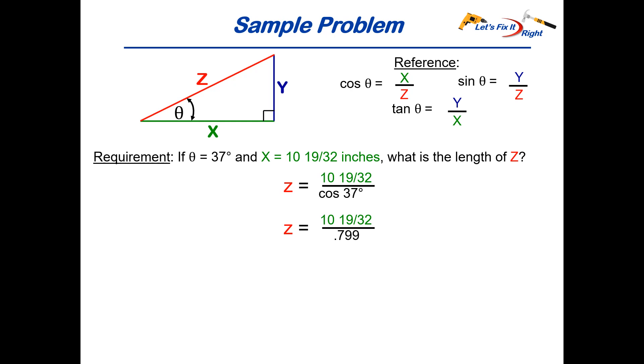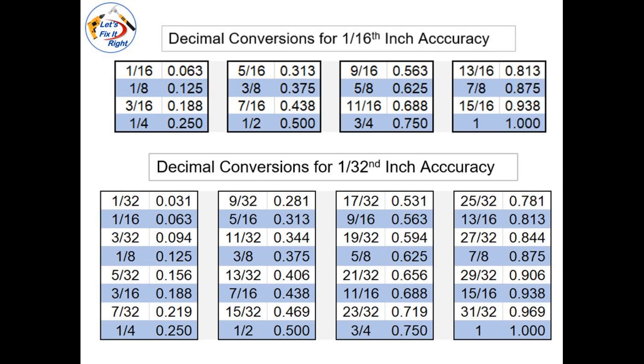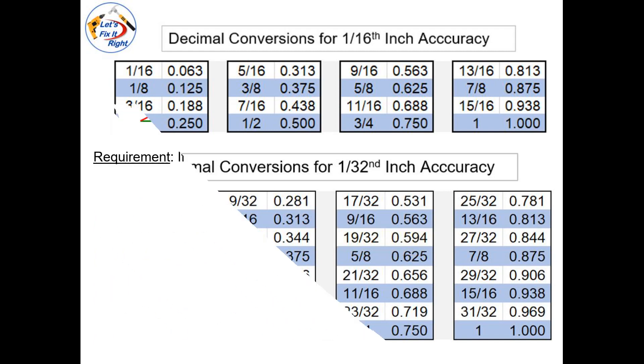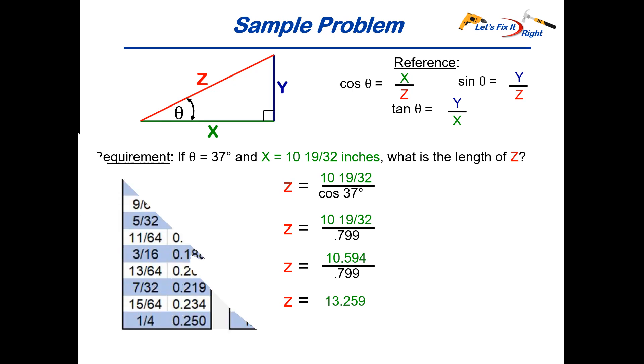For easy calculation purposes we'll convert the 19/32 to 0.594 using our let's fix it right decimal conversion table and substitute it into our equation also. Next we'll divide the 10.594 by 0.799 and achieve a value of 13.259. This is a good value but it's difficult to accurately mark with a standard measuring tape.